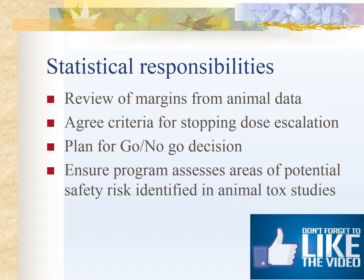The statistician's responsibilities here include reviewing the safety margin from the animal data, agreeing criteria for stopping dose escalation, planning for go and no-go decisions, and ensuring the program addresses areas of potential safety risk identified in animal toxicity studies. Statisticians tell us whether we should proceed — yes or no — and identify potential safety risks from animal toxicity studies.